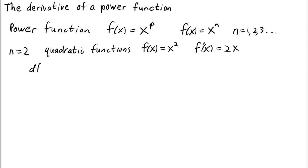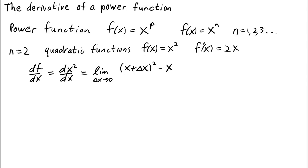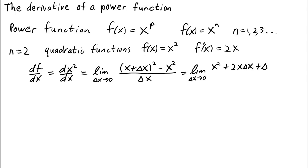The derivative df/dx — which we could also write as d(x²)/dx — is the limit as Δx goes to zero of (x + Δx)² minus x², that's the change in the output of f, all over Δx, the change in the input. When we multiply out the quadratic, we get x² + 2x·Δx + Δx² minus x², all over Δx.